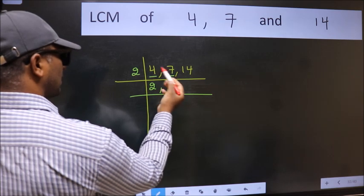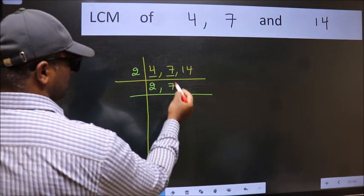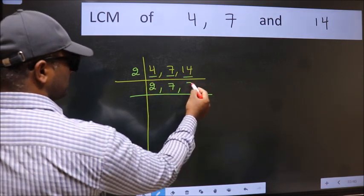The other number 7, not divisible by 2, so we write it down as it is. The other number 14, when do we get 14 in 2 table? 2 7's 14.